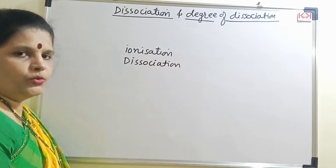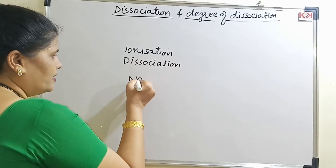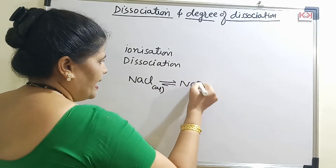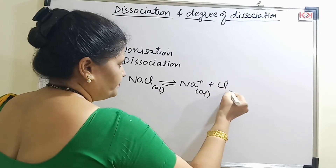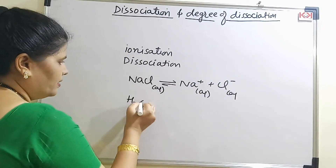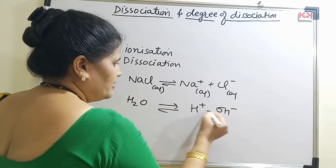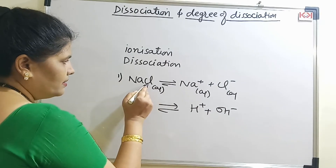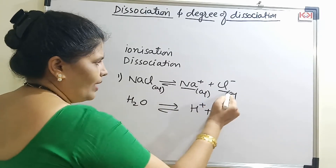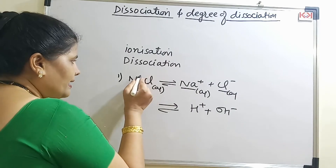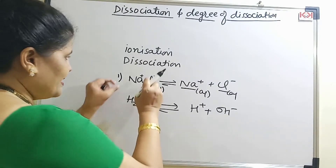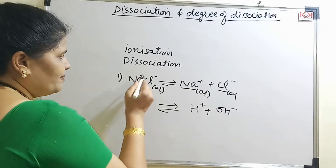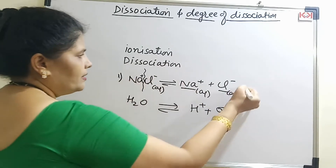There is a major difference between the two. If we take a molecule NaCl and put it in water, we get Na+ and Cl- ions. Here, I am separating two ions which were already in the ionic form — I am not creating any new ions. This process is called dissociation.